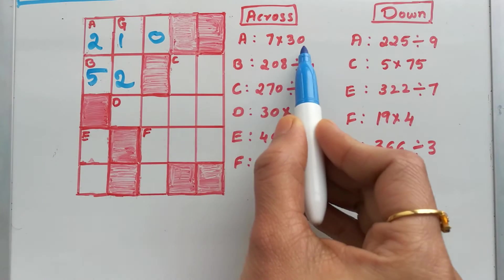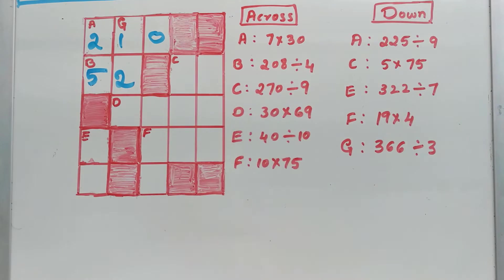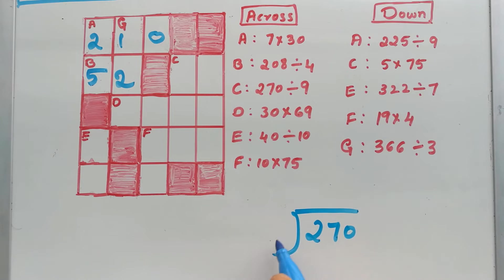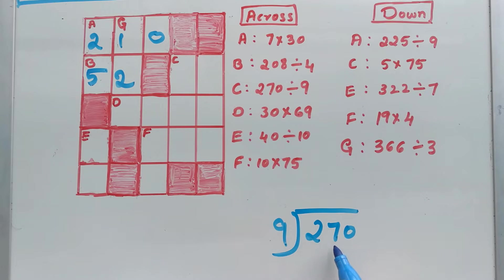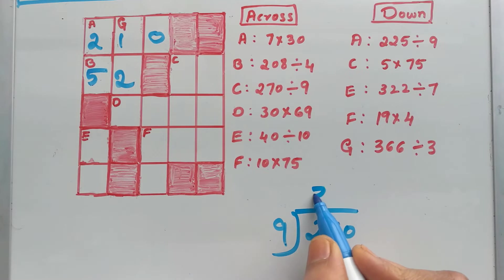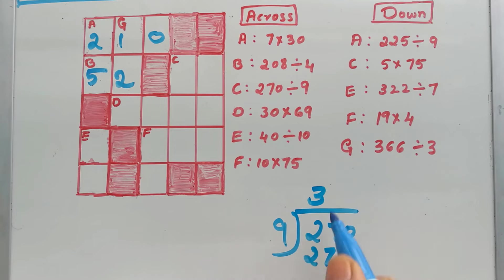A and B are done. Now C: 270 divided by 9. The first digit 2 is smaller than 9, so take the next number also — that is 27. 9 times 1 is 9, 9 times 2 is 18, 9 times 3 is 27. First divide, then multiply and write: 9 times 3 is 27.